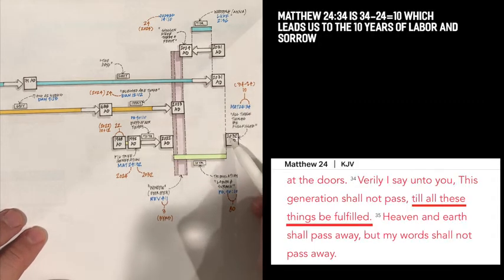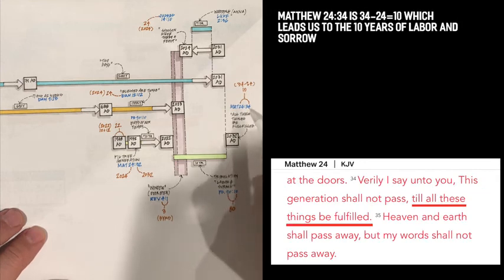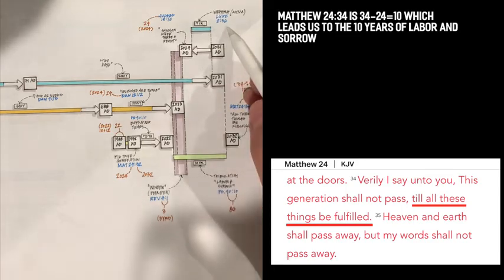Then, in the edge of it, at the edge of the 10 years, we have the 2032. And that is from the Matthew 24, which now has an incredible relevance. Matthew 24:34. 34 minus 24 is 10. Again, talking about the border edge of this 10 years of labor and sorrow. So that works incredibly well.